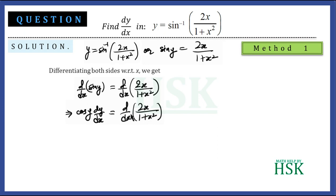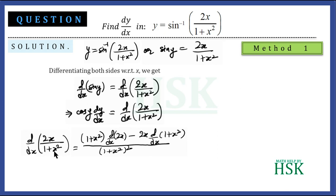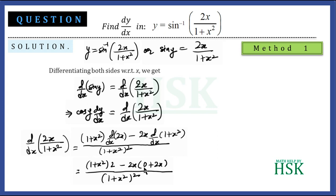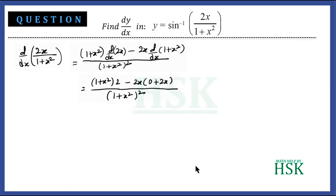We solve d/dx(2x/(1+x²)) separately using the quotient rule: denominator times differentiation of numerator minus numerator times differentiation of denominator, all over denominator squared. Differentiation of 2x is 2, and differentiation of (1+x²) is 2x. This gives (1+x²)·2 − 2x·(2x), all over (1+x²)², which equals (2 + 2x² − 4x²)/(1+x²)².